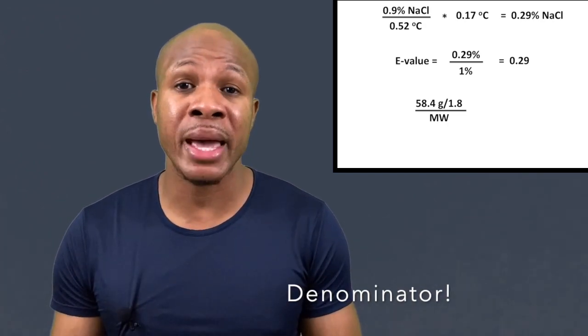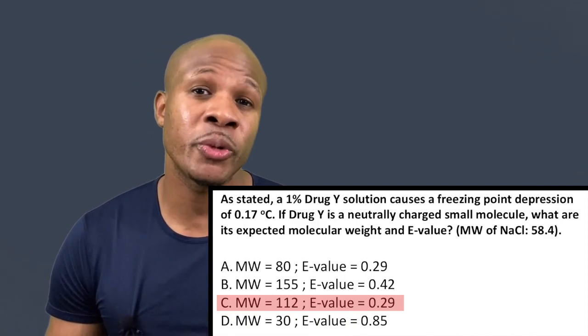In the denominator we put the mass of drug Y that gives one mole of drug Y particles, which is just the molecular weight of drug Y — because drug Y is a neutrally charged small molecule, not a salt, so it does not dissociate. The molecular weight of drug Y gives us one mole of drug Y particles. So the equation is: (58.4 / 1.8) / MW(drug Y) = 0.29. Solving for the molecular weight gives us approximately 111.88, which is approximately 112. The answer is choice C: molecular weight is 112 and E value is 0.29.